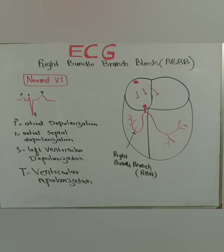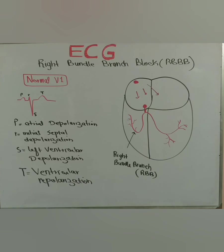Then the wave of depolarization goes into both the right and left bundle branches almost simultaneously. It depolarizes both the right and left ventricles. Because the mass of the left ventricle is more than the right ventricle, the wave of depolarization of the left ventricle becomes more significant. Normally, the wave of depolarization of the left ventricle goes away from V1 and V2. By the rule of thumb, when an ECG lead looks at a wave of depolarization going away from it, it generates a negatively deflected wave — so V1 generates an S wave because of the left ventricular depolarization going away from it.